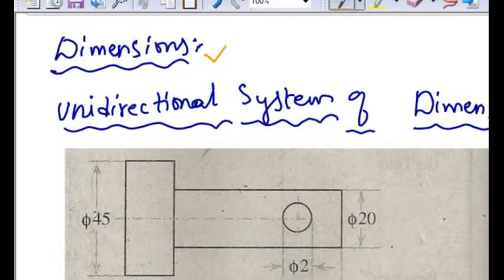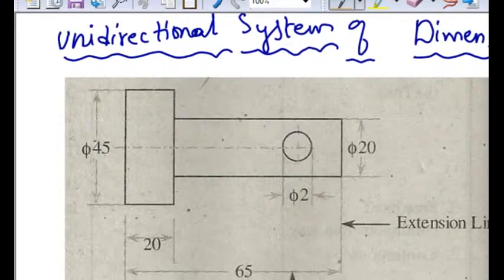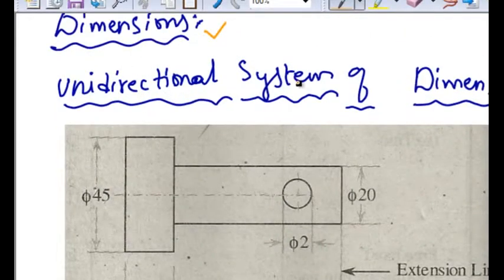The dimensioning is of two types. Methods of dimensioning can be broadly classified into unidirectional system of dimensions and aligned system of dimensions. What is unidirectional system of dimensions?